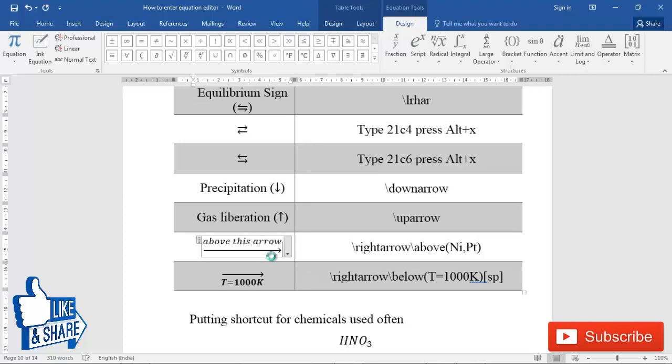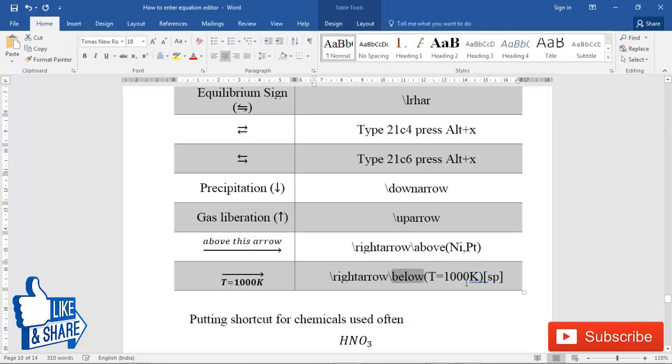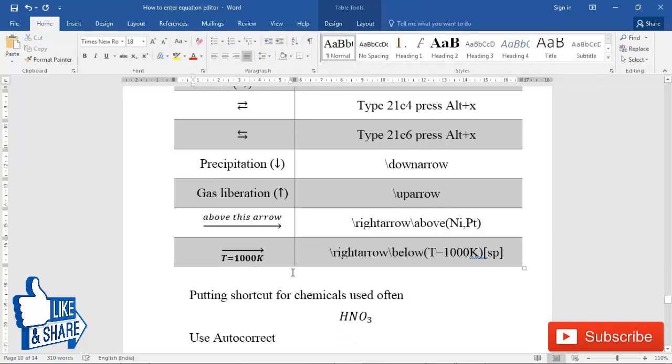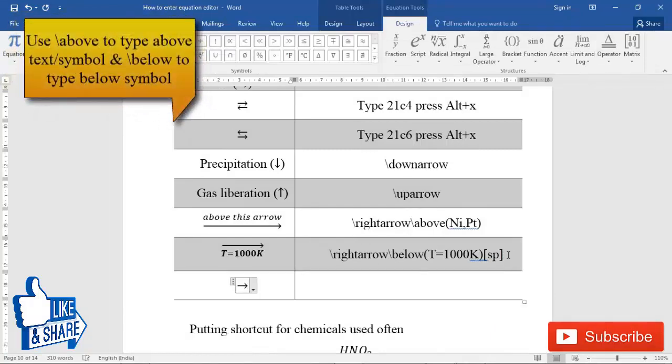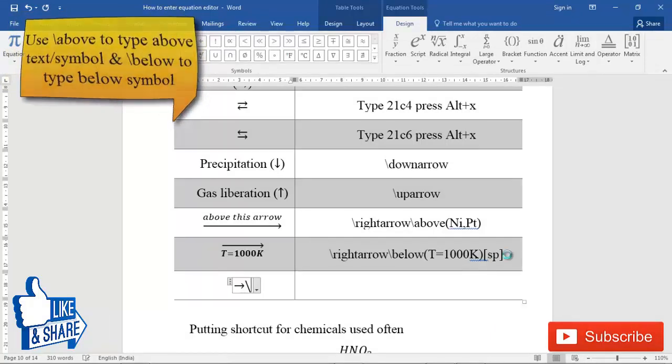Press space. Similarly, for typing below the arrow, you can use this keyword backslash below and type anything that you want to insert below the arrow. If you want to type above and below the arrow, you can use the combination of above keyword.